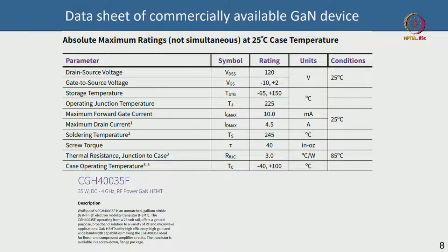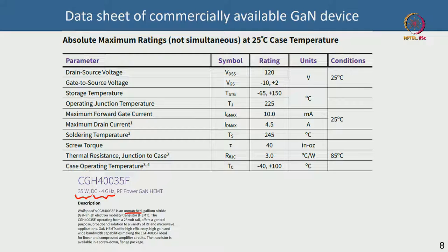Looking at the datasheet of a commercially available GaN HEMT: this device has 35 W of power from 0 to 4 GHz — it can give approximately 35 W at almost DC up to 4 GHz. This is an unmatched GaN device — the company does not provide matching. They give you detailed data, and you need to design the matching circuit yourself.